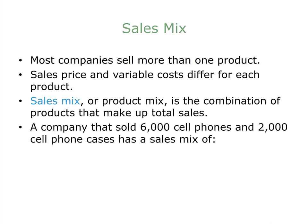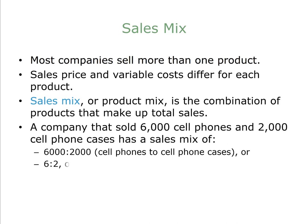For example, let's say a company sold 6,000 cell phones and 2,000 cell phone cases. They would have a sales mix of 6,000 to 2,000. To get more manageable numbers, we divide both sides by 1,000 to get a sales mix of 6 to 2, or we can convert to the least common ratio: three cell phones sold for every one cell phone case. All three of these sales mixes represent the same ratio, so we could use 6,000 to 2,000, or 6 to 2, or 3 to 1.